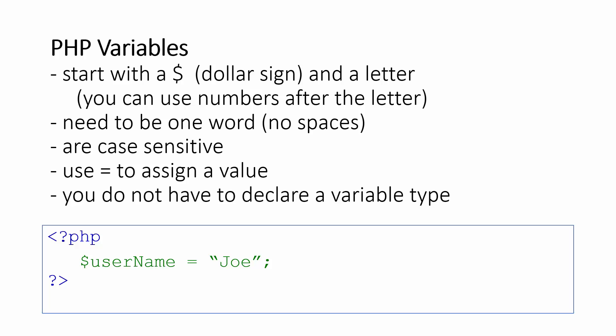When dealing with variables, PHP variables start with a dollar sign and a letter. You can use numbers after the letter, but you can't start with a dollar sign and a number right away. They need to be one word — no spaces in your variable name — and they are case sensitive. For instance, a variable called username in all caps would be an entirely different variable than one in mixed case. You use an equal sign to assign a value: the variable goes on the left and the value on the right. You can't say Joe equals username — you have to put the variable first, then equals, then your value.